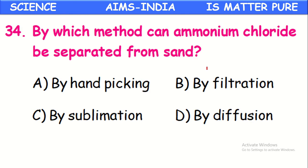By which method can ammonium chloride be separated from sand? Ammonium chloride is a sublimable solid — on heating it directly converts from solid state to gaseous state without passing through the liquid state. So the mixture of sand and ammonium chloride can be separated by the process called sublimation.